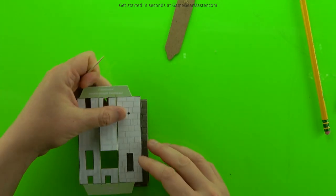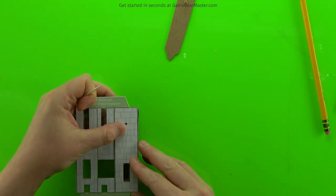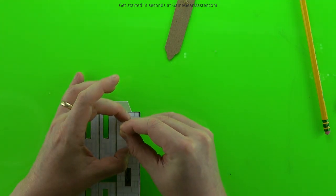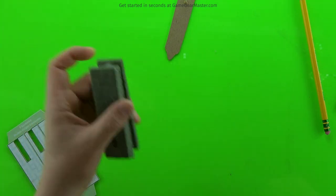And then while that's drying, I'm going to make the hole for the decorator in one of my connectors. You just do that by laying the template over the connector and then punching through it with a toothpick.